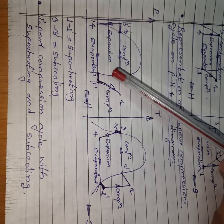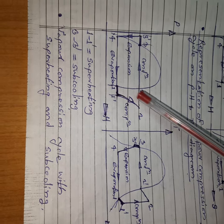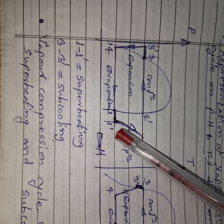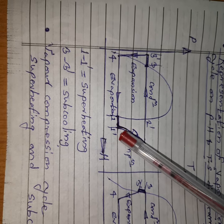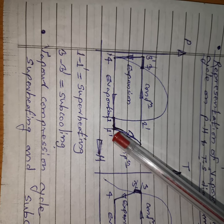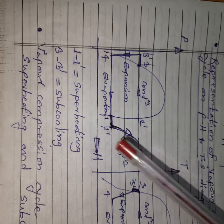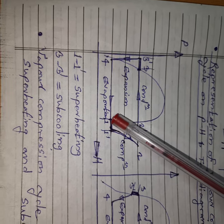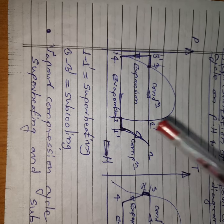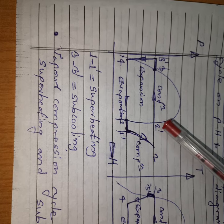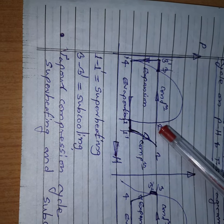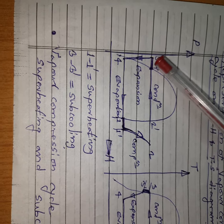Generally in the vapor compression cycle we prefer dry compression. But if at the end of evaporation we get a superheated refrigerant, that is an increase from 1 to 1'. In superheated form it enters the compressor, increasing the refrigerating effect. Previous RE was 4 to 1; now there is an additional RE from 1 to 1'', so in the same cycle we get more refrigerating effect and the coefficient of performance increases. Superheating is shown as 1 to 1'', then 1' to 2'' for compression, 2 to 2'' for removal of sensible heat, 2' to 3' for removal of latent heat, and 3 to 3' for subcooling.